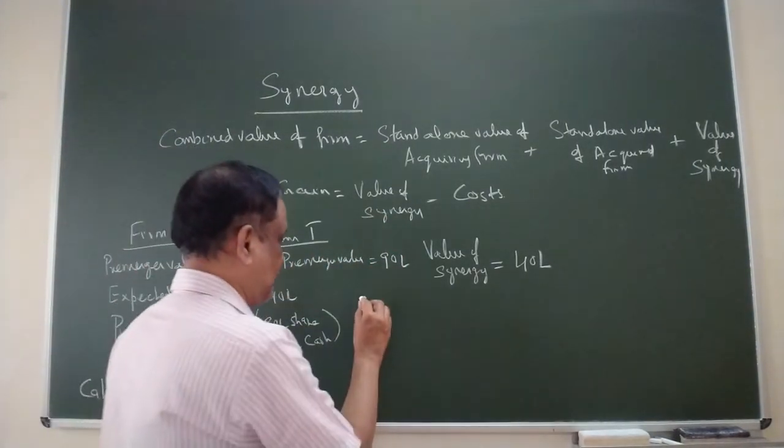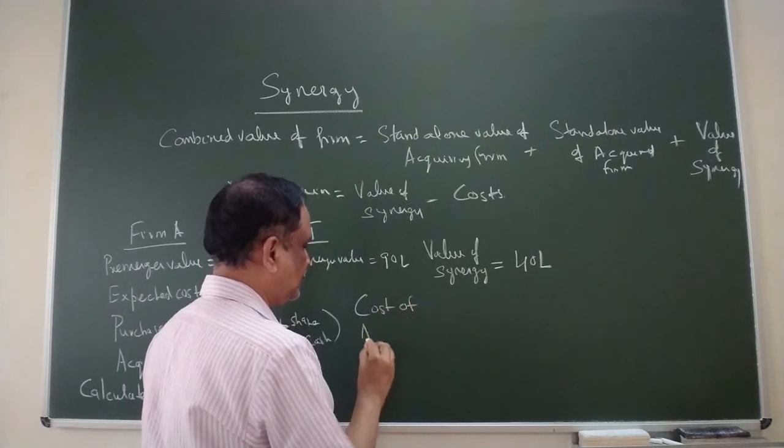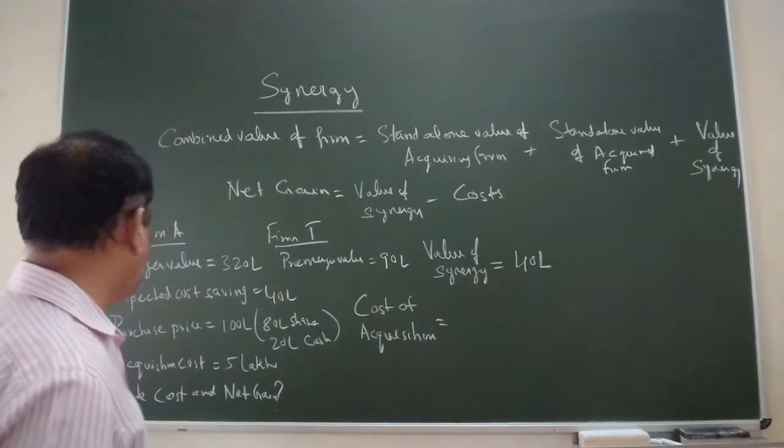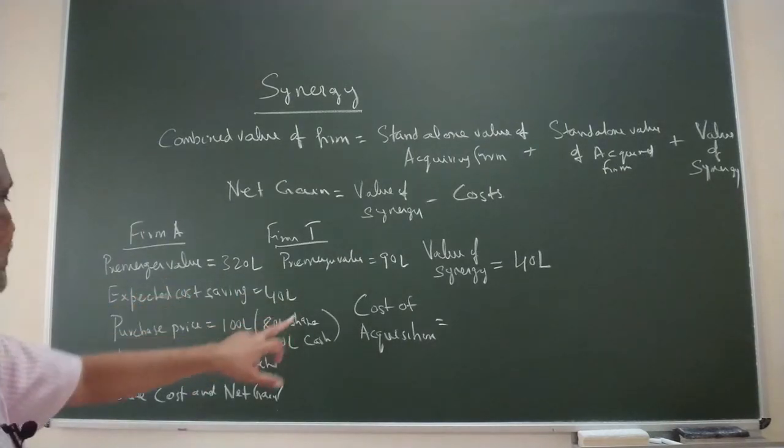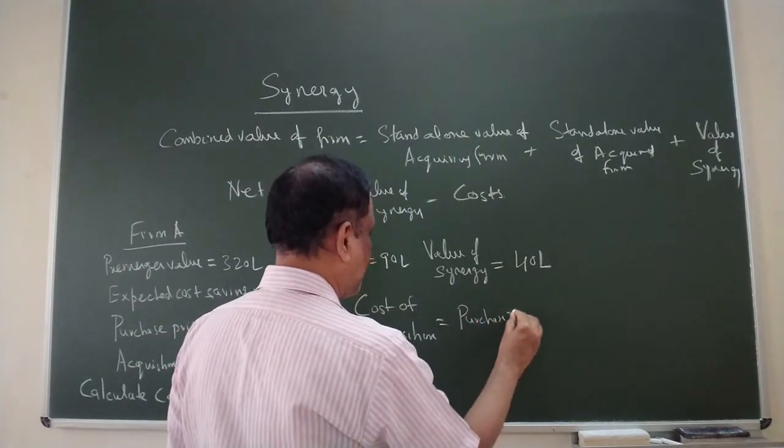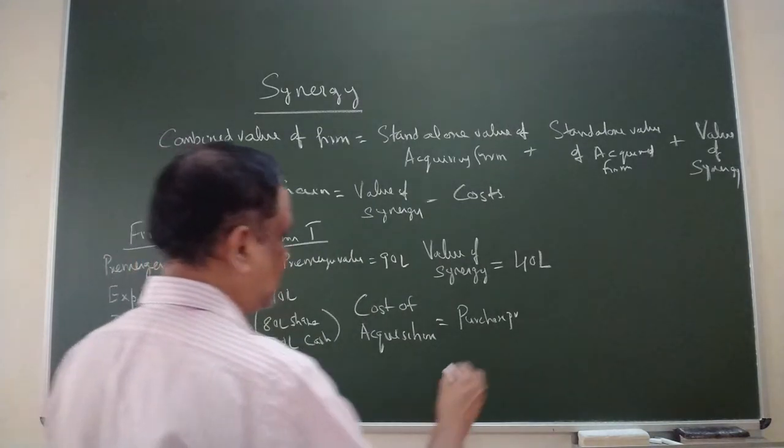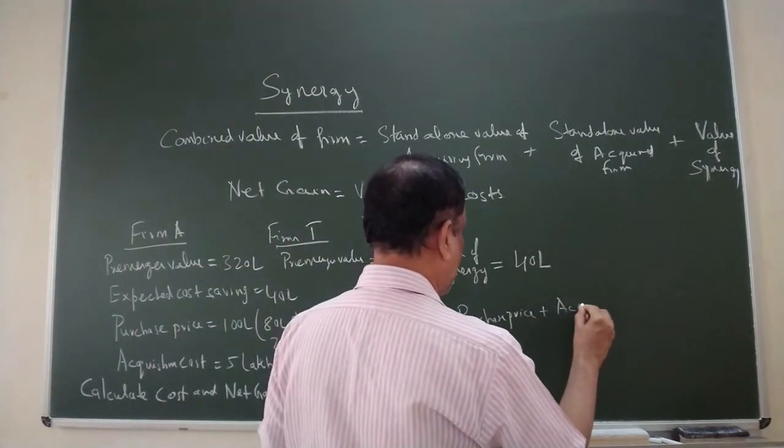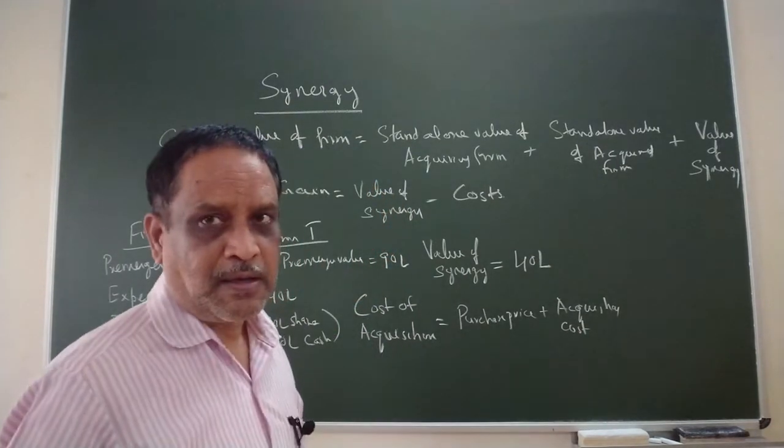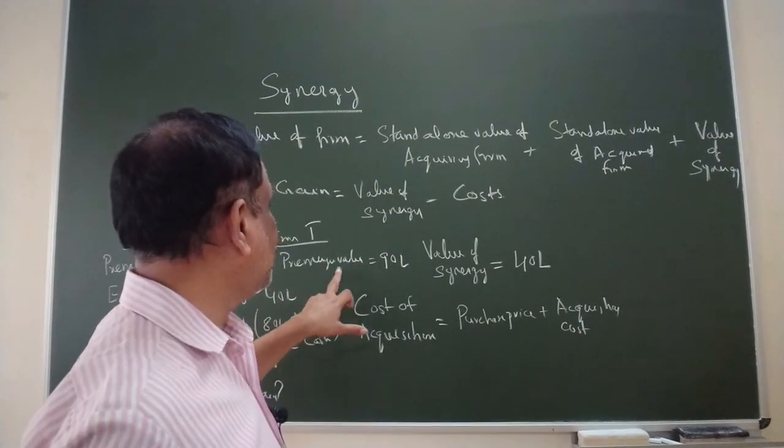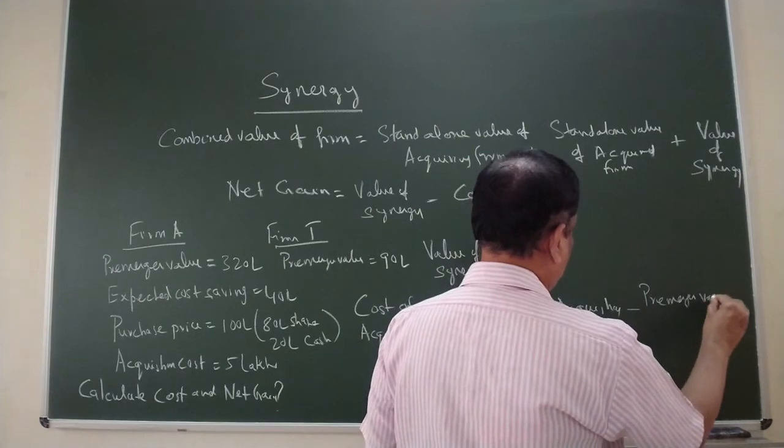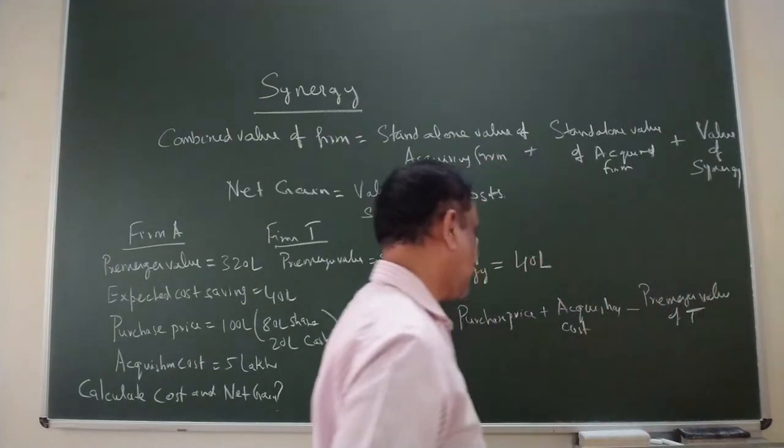We have to calculate cost, cost of acquisition. Let us see what are all the costs involved. First one is purchase price, purchase price plus acquisition cost plus legal and other charges. This is the cost involved and actual value of the firm T is 90 lakhs minus pre-merger value of T.